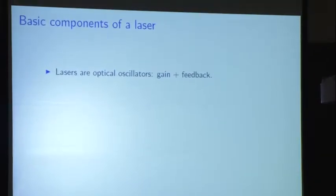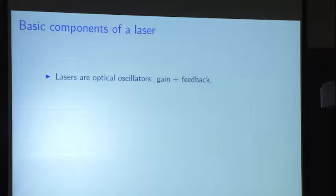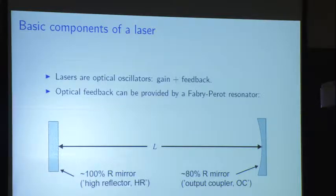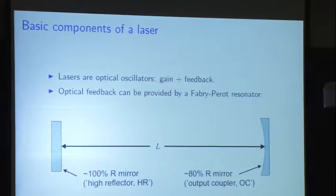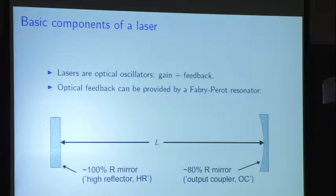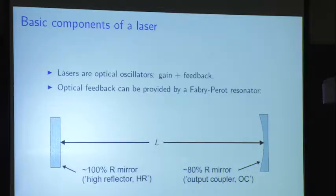Lasers are optical oscillators. For an electrical engineer, that means you need gain and feedback. For feedback, there's going to be a gain medium inside, but let's talk about feedback first — it's a Fabry-Perot resonator, a couple of mirrors pointed at each other. There's a thing called a high reflector, because it has the highest reflectivity you can manage to coat. These coatings are dielectric coatings laid down in an evaporator system, sort of like a CVD system. The mirrors are spaced apart by L, and then there's an output coupler. The amount of transmission you put on the output coupler depends on the gain level inside the cavity. You choose output coupling that optimizes the performance of the laser.